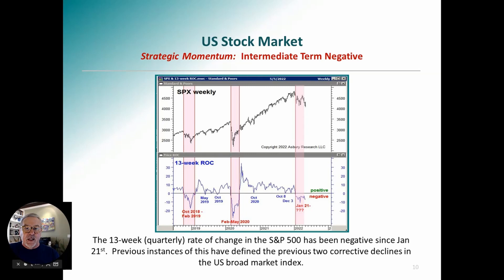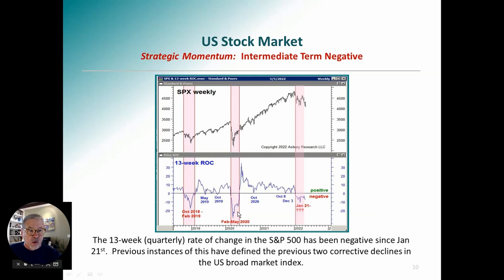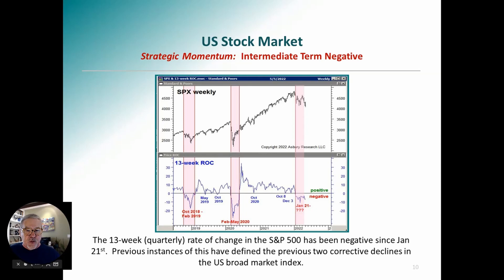Strategic momentum — we have a couple of indicators for this. This simple one is a 13-week rate of change in the S&P 500. It's been negative since January 21st, meaning we're in a downtrend. Our view is we are currently in a downtrend in the S&P 500. The last two times this went below the zero line were February to May 2020 — right when we made the COVID lows, that nasty 35% top-to-bottom drop — and October 2018 to February 2019. Bigger picture: as long as we're underneath the zero line on this indicator, we're still in a bear market.